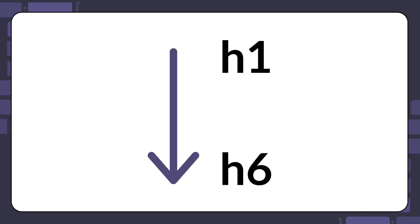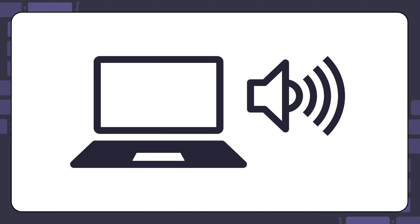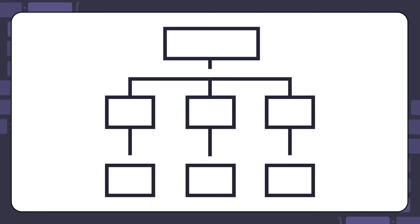Headings, ranging from H1 to H6, create a navigational structure for screen reader users. Screen readers can list all headings on a page, allowing users to jump directly to the sections they need.